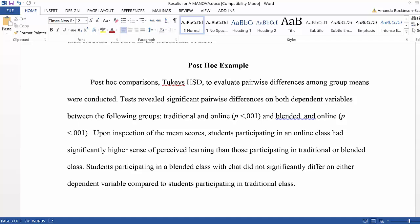let's say that our type of program independent variable had three groups: online, traditional, and blended. If that was the case, then we would also need to report post-hocs.